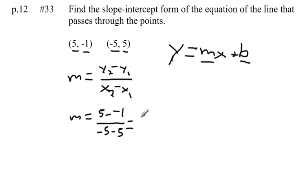And if we simplify this fraction, 5 minus negative 1 is equal to 6. Negative 5 minus 5 is equal to negative 10. And we can reduce this fraction to negative 3 fifths.